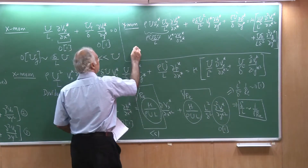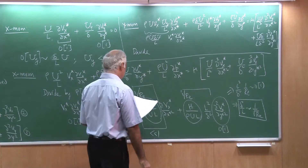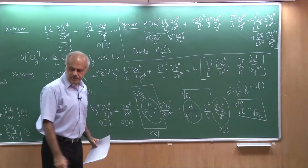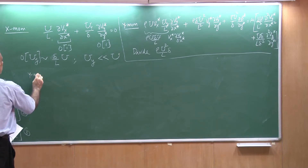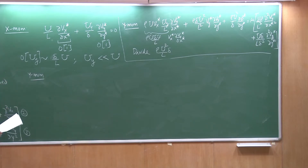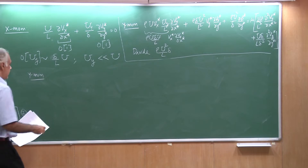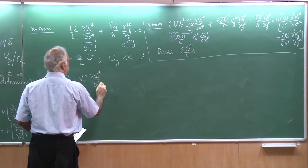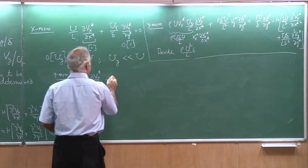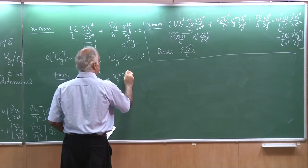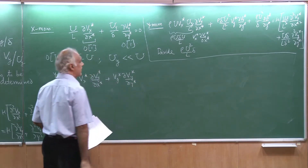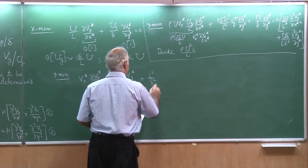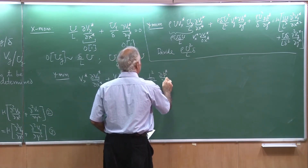For this equation, what I will do is divide everywhere by rho u squared delta by L times delta. So I am continuing on the y momentum equation - all I have done is taken the equation and divided everywhere by rho u squared delta by L. I would get Vx star del Vy star by del x star plus Vy star del Vy star by del y star. That is the convection term. Then the pressure gradient term, which would be L squared by delta squared times del p star by del y star.